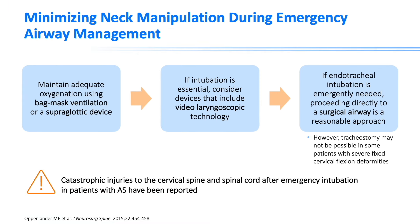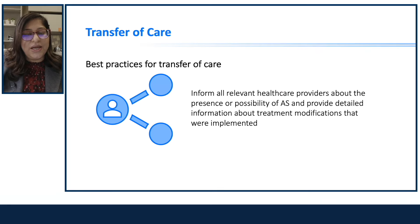Maintain adequate oxygenation with bag-mask ventilation or a supraglottic device. If intubation is essential, consider devices that include video laryngoscopic technology. If endotracheal intubation is emergently needed, a surgical airway is a reasonable approach, but be very careful in patients with fixed flexion deformities, as access to the front of the neck may not be possible. When transferring care, inform all relevant healthcare providers about the presence or possibility of AS and the treatment modifications implemented. A good handoff is really important.